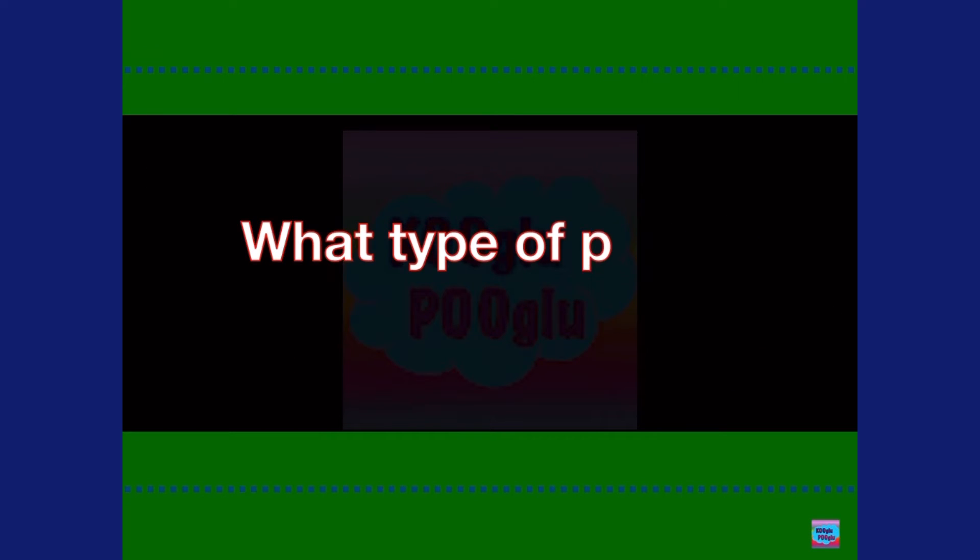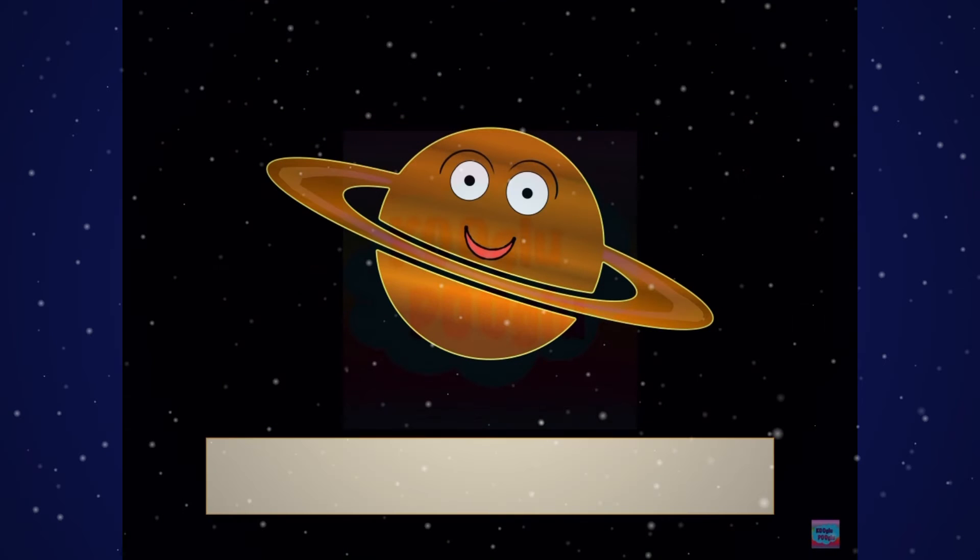What type of planet is Saturn? This is a gas giant planet, mostly made of hydrogen and helium.